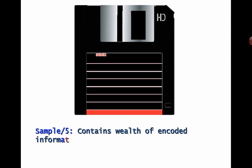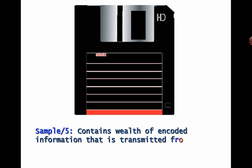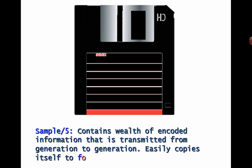Sample 5: contains a wealth of encoded information that is transmitted from generation to generation, easily copies itself to form offspring, various colors.